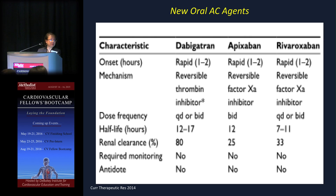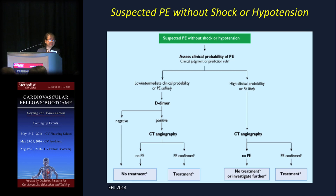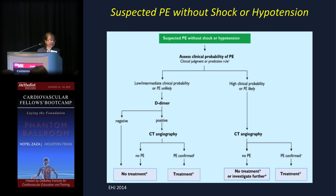Apixaban has the lowest amount of renal clearance, allowing more generous GFR thresholds for use. It does not require monitoring, but there is no way to reverse bleeding. For a patient with suspected PE without shock or hypotension, assess clinical probability — if low or intermediate, get a D-dimer; if negative, no treatment needed; if positive, get a CT scan; if no PE, no further workup needed; if PE is confirmed, treat.